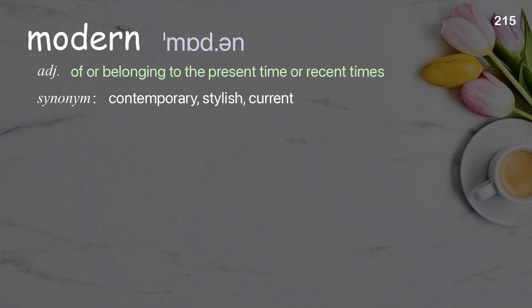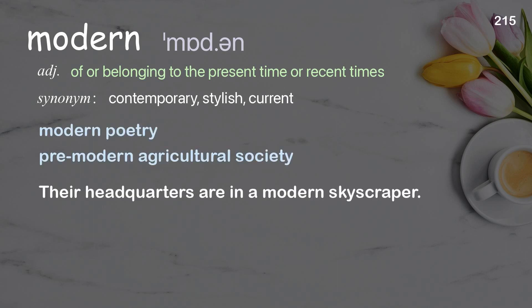Modern: of or belonging to the present time or recent times. Examples: modern poetry, premodern agricultural society. Their headquarters are in a modern skyscraper.